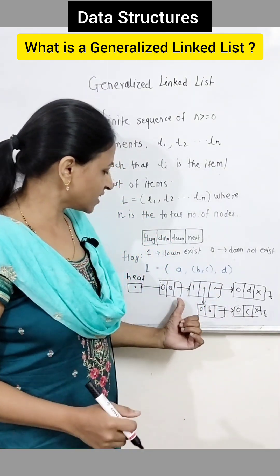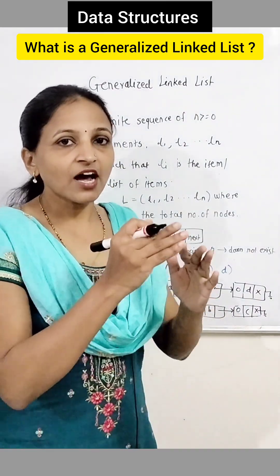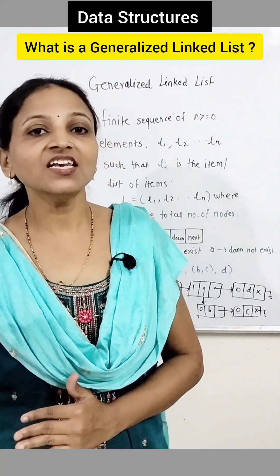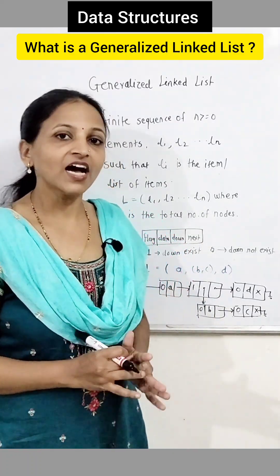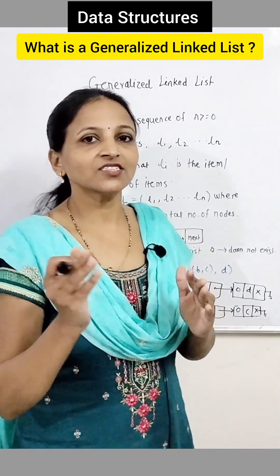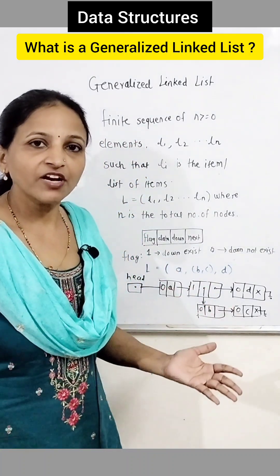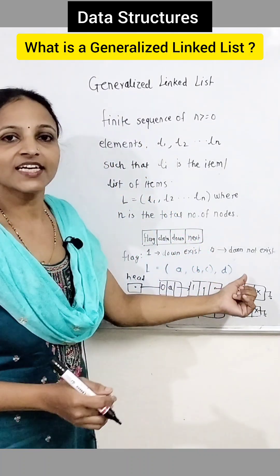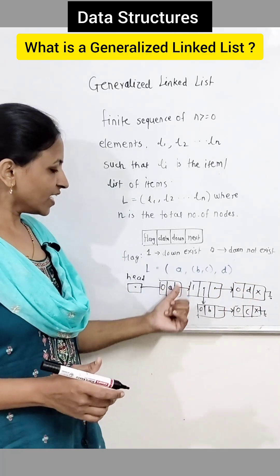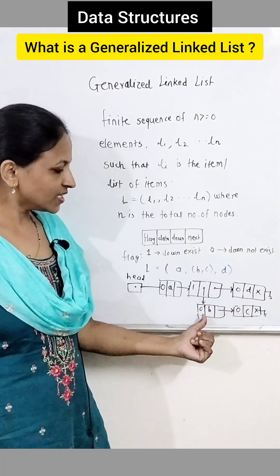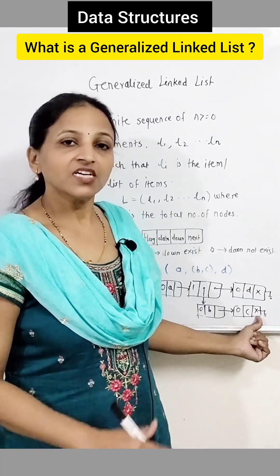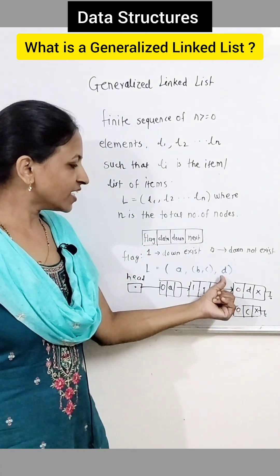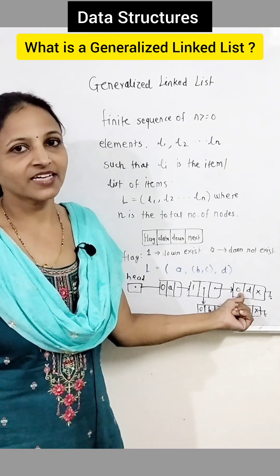Now how to represent it? Whenever flag is one, it means the down pointer exists, meaning that node is a list, not a normal data. And if flag is zero, it means that is not a list — the down pointer will not exist in that case. For example, here we can draw the generalized linked list like this. Here A is just a data, that's why flag is zero. B and C form a list, so we have created a list node here and flag is one in that case. And D is just a data, that's why flag is zero.